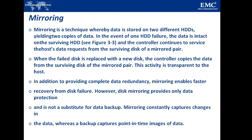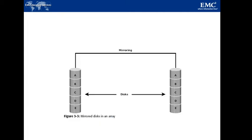In the figure, there are two sets of disk drives containing the same data — A, B, C, D, E — copied onto another set of disks, which is mirroring. There will be two sets of disk drives with the same data, so that even if one disk drive fails, we have another copy of the data.